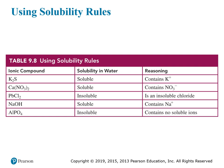Let's go through some examples. Potassium sulfide contains potassium, so it's soluble. Calcium nitrate contains nitrate, so it's soluble. Lead chloride: chlorides tend to be soluble, but lead is an exception, so this is insoluble. Sodium hydroxide contains sodium, making it always soluble. Aluminum phosphate: neither aluminum nor phosphate appears in the solubility chart, and if an ion isn't listed, the compound is not soluble — so aluminum phosphate is insoluble.